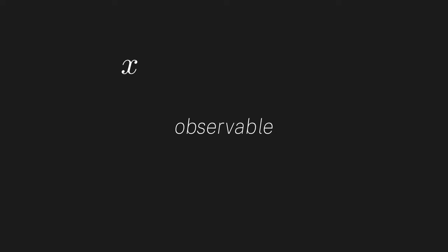First, we are going to change our language a bit. We are going to use the word observable for any physical quantity that we can measure out of our particle. This includes position, momentum, energy, angular momentum, or any combination of those. Basically anything we can measure and therefore observe from our particle.